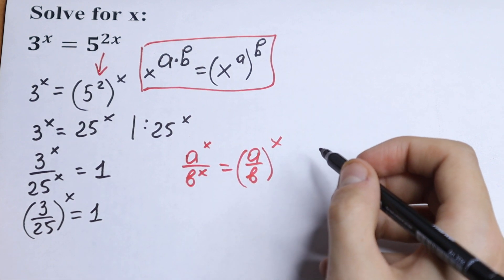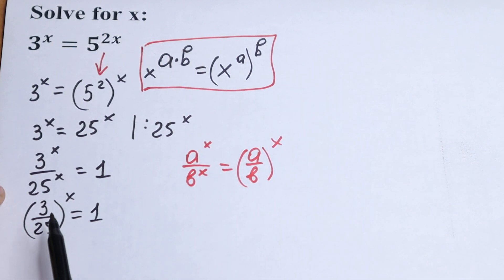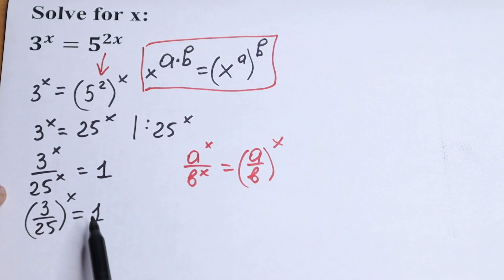What are we going to do next? Of course we have an exponential function right here and we can write this 1 as 3 over 25 to the power 0.